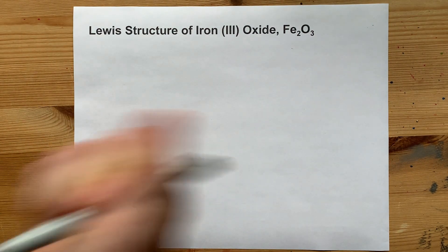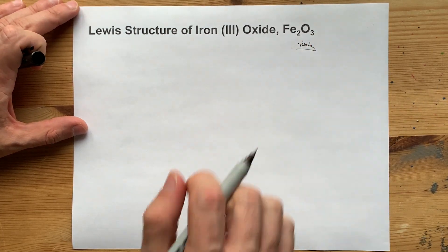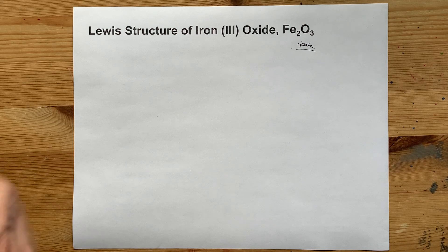When a metal and non-metal combine, you end up with an ionic compound, which means there's a transfer of electrons from one to the other.